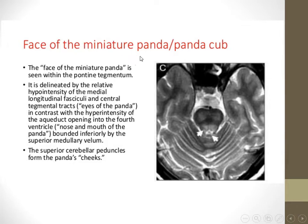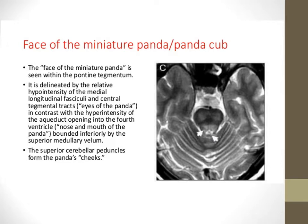We also have the face of the miniature panda — the panda cub — involving the pons. So we have a giant panda and a small panda. The miniature panda involves just the tegmental part of the pons, not all of the pons. The hypointense medial longitudinal fasciculi and tegmental tract form the eyes of the cub panda.